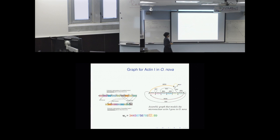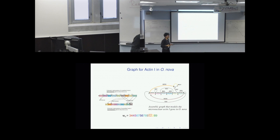We call this an assembly graph that models the micronuclear Actin-1 gene of Oxytricha nova. I have labeled the edges according to the MDSs. The sequence from 1 through 9 appears in here — it starts from one location and follows: 1, 2, 3, 4, 5, 6, 7, 8, 9.